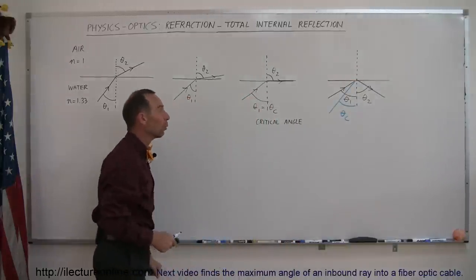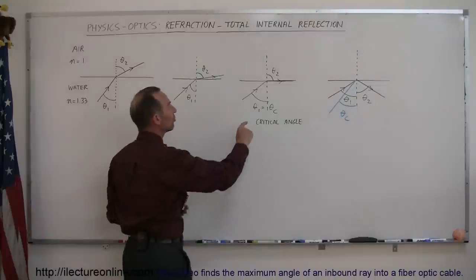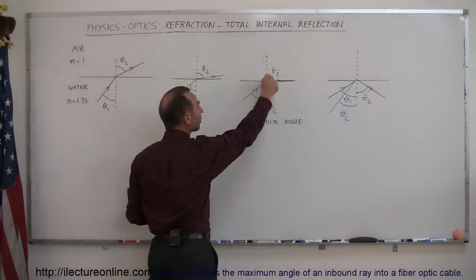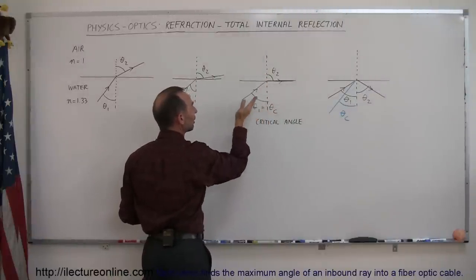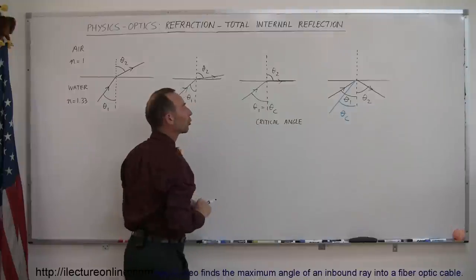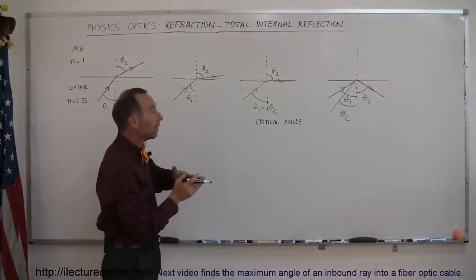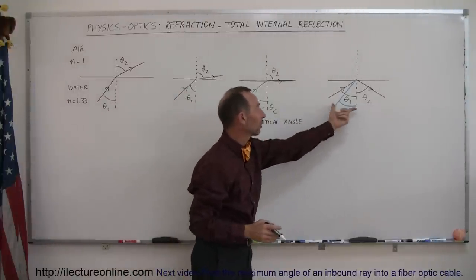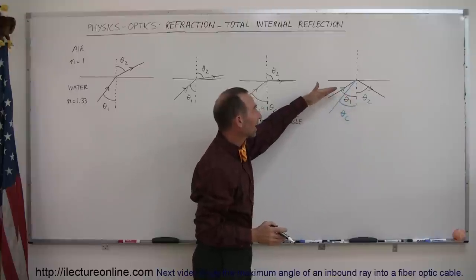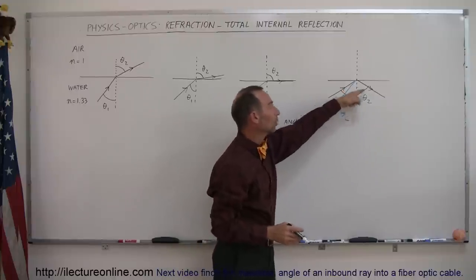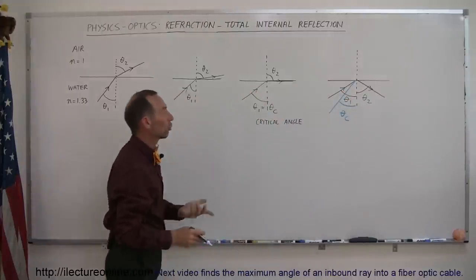So the angle at which the angle of refraction is 90 degrees, we call the incident angle equal to the critical angle. That's the angle at which if you go beyond it, like we show right here, if this is the critical angle and the incident angle is greater than the critical angle, you will then have what we call total internal reflection.